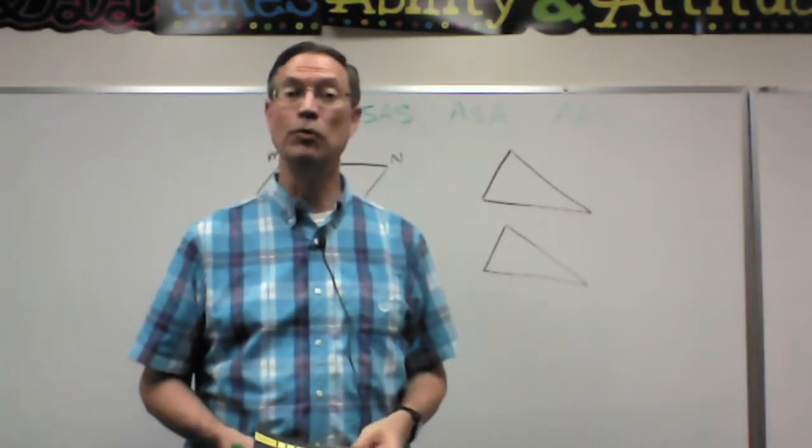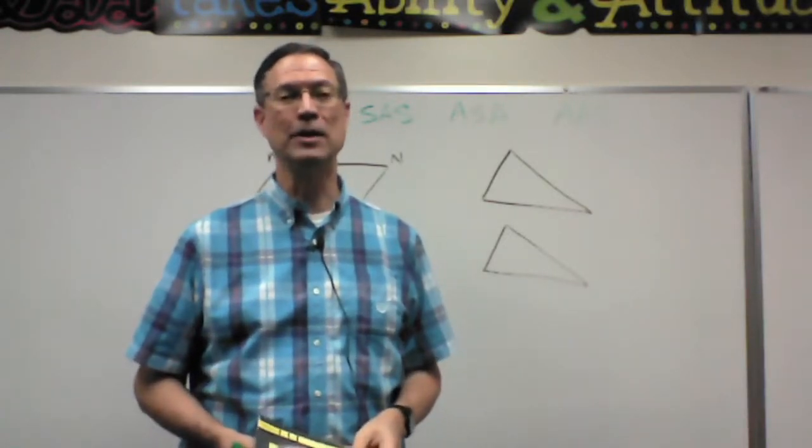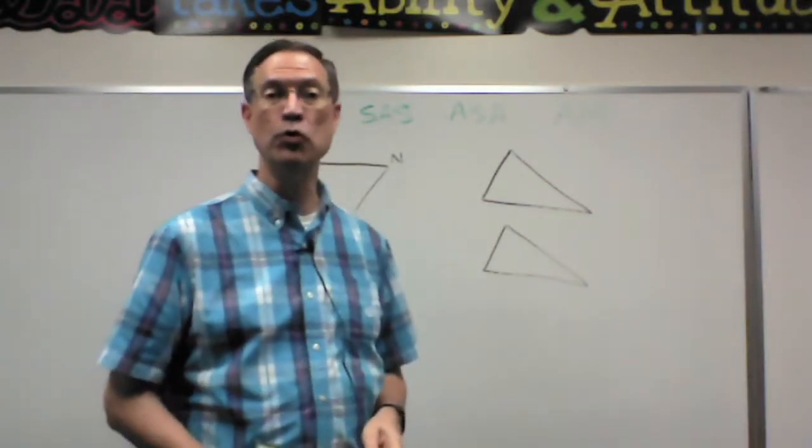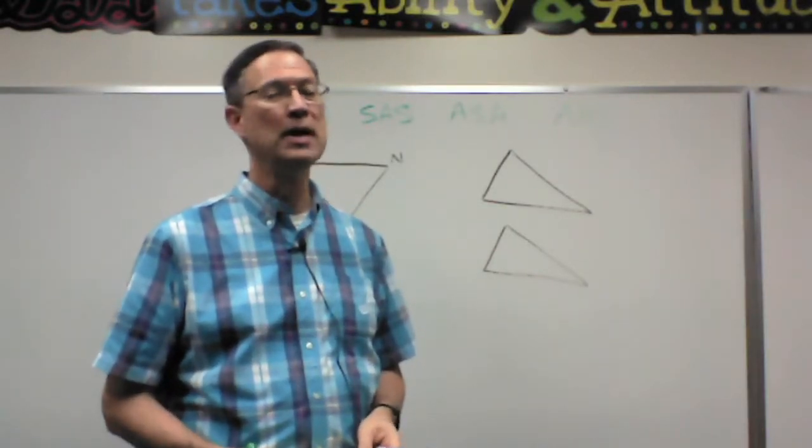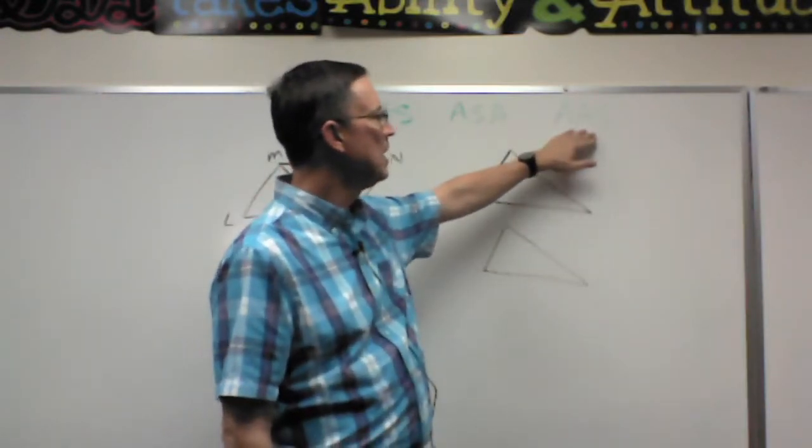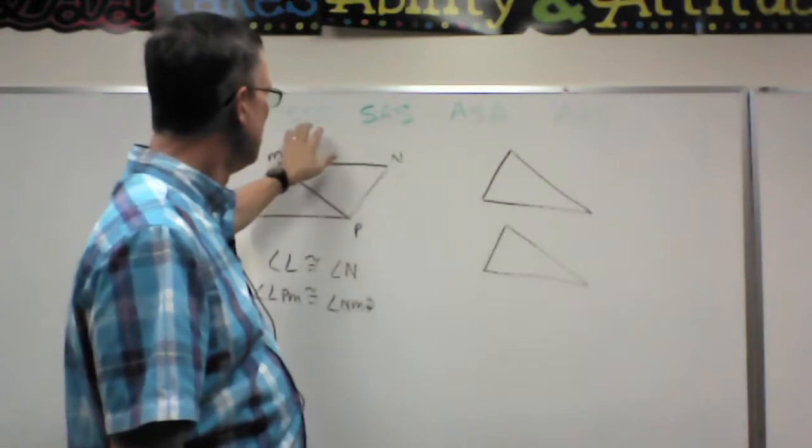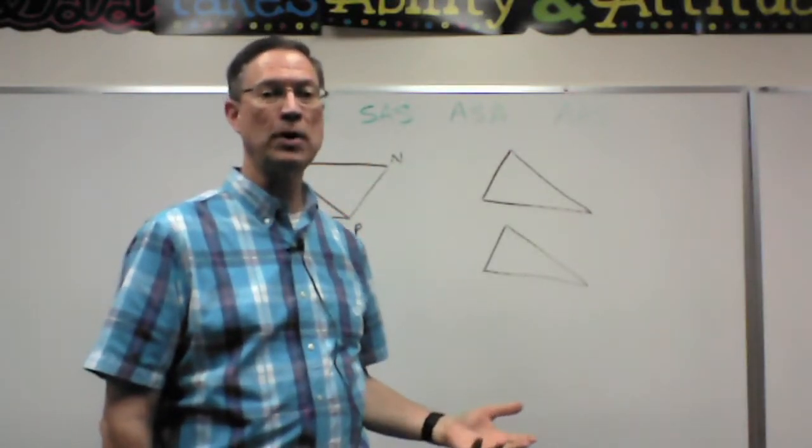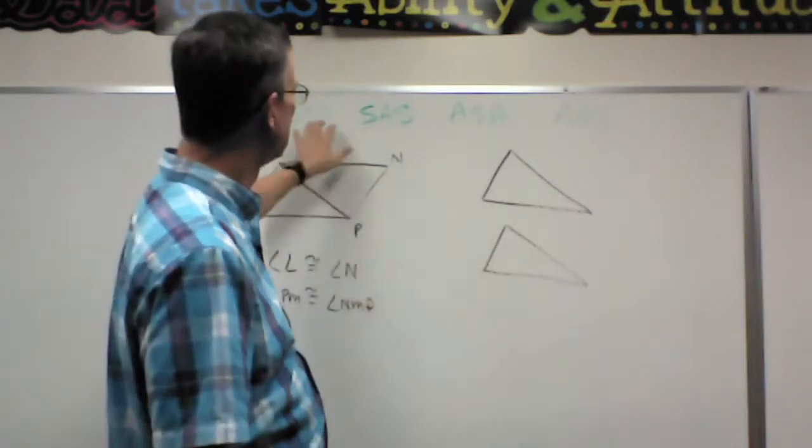But hopefully you remember that and that's not too hard at this point. I do want to talk about some of the ways that we can prove that triangles are congruent. Just a quick review, and then let's talk about this AAS. So you remember that SSS means all three sides of one triangle are congruent to the three sides of another.